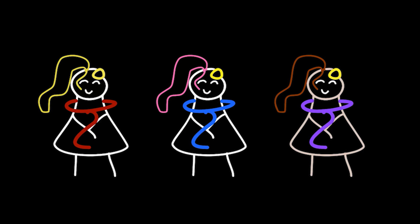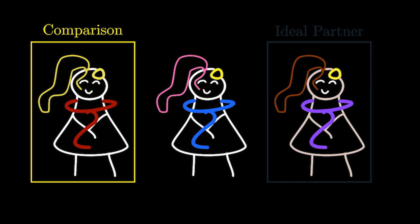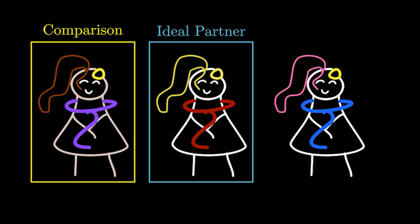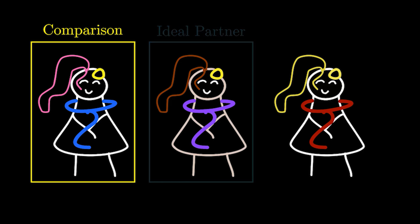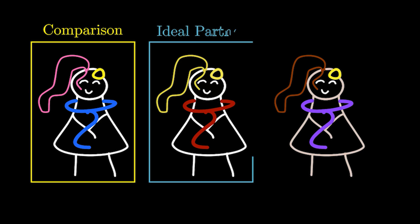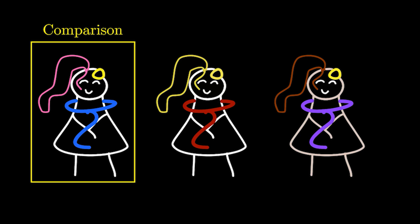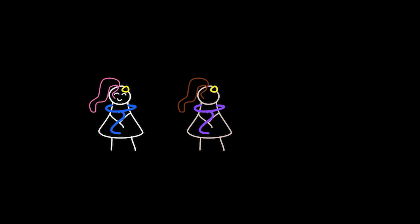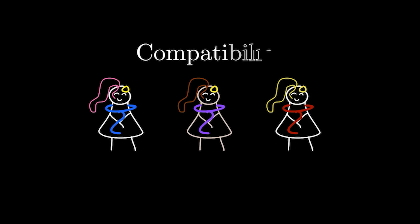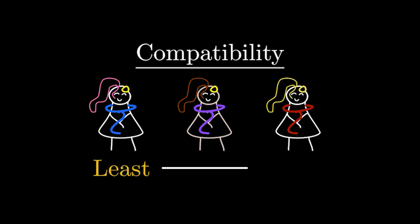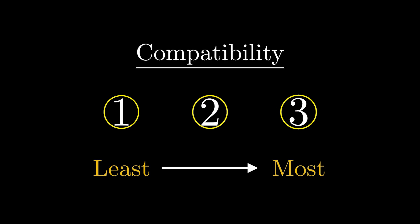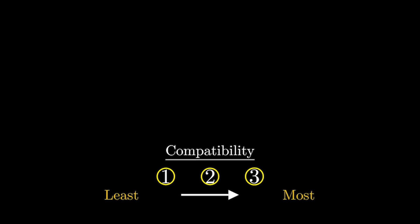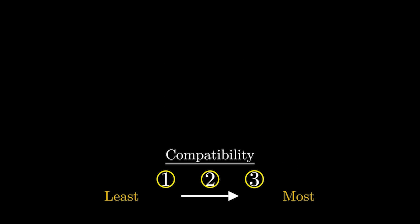Something I've mentioned a couple of times in this video is that we know nothing about these people before we speak to them, which means we could have spoken to these people in any possible order. Using our method — where we set the first person as a comparison and then accept the first person who's better than them — will result in scenarios where we could accept each person as our ideal partner given the right conditions, which seems counterintuitive. Let's represent our people with numbers. We can order the people in terms of how compatible we were with them: 1 means we're the least compatible, and 3 means we're the most compatible. We can begin to list the possible orders in which we could have spoken to the people.